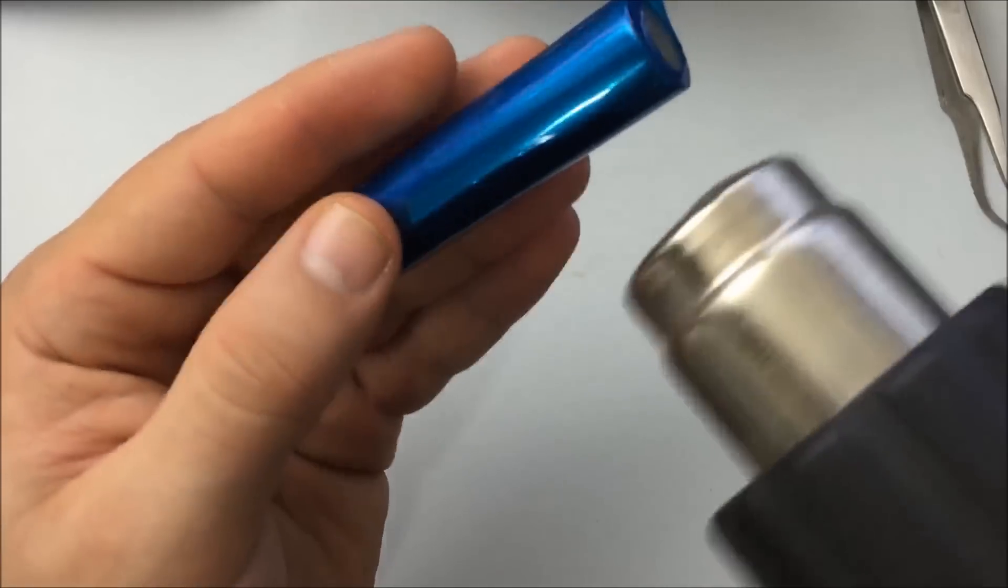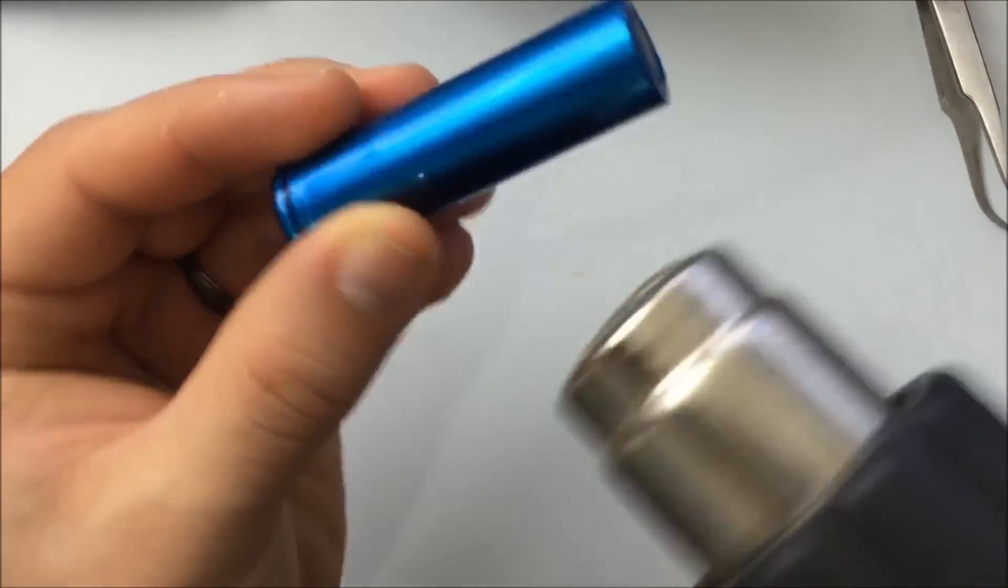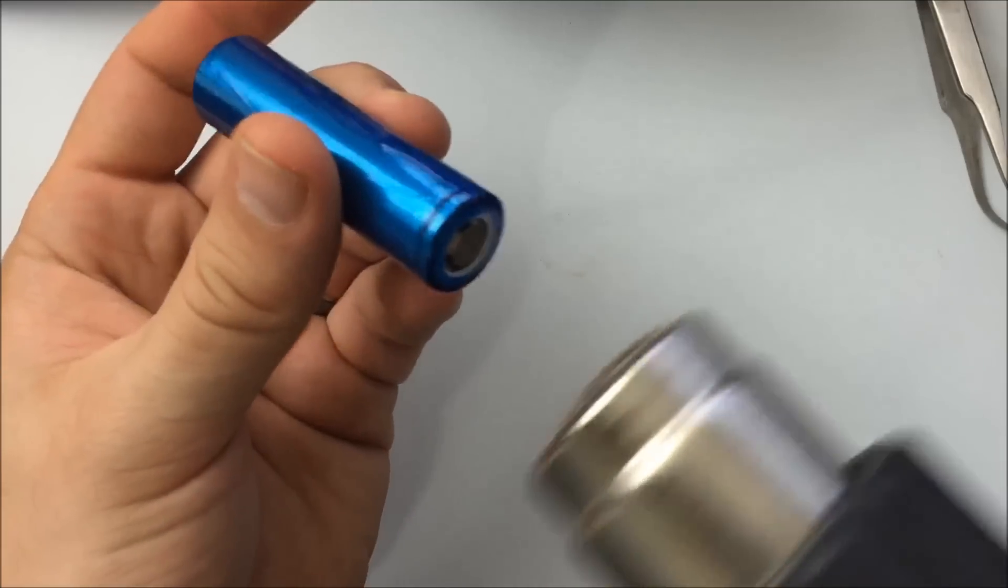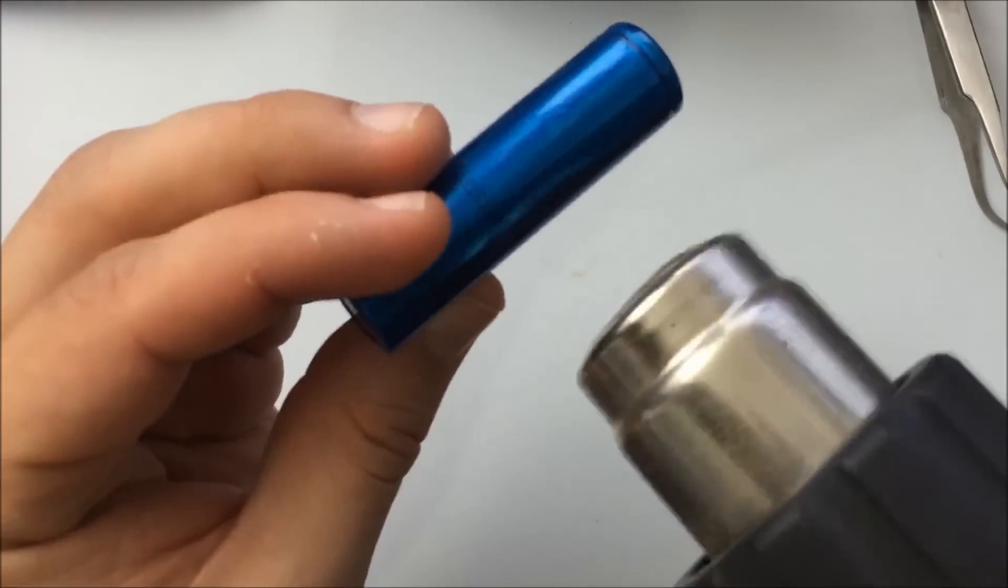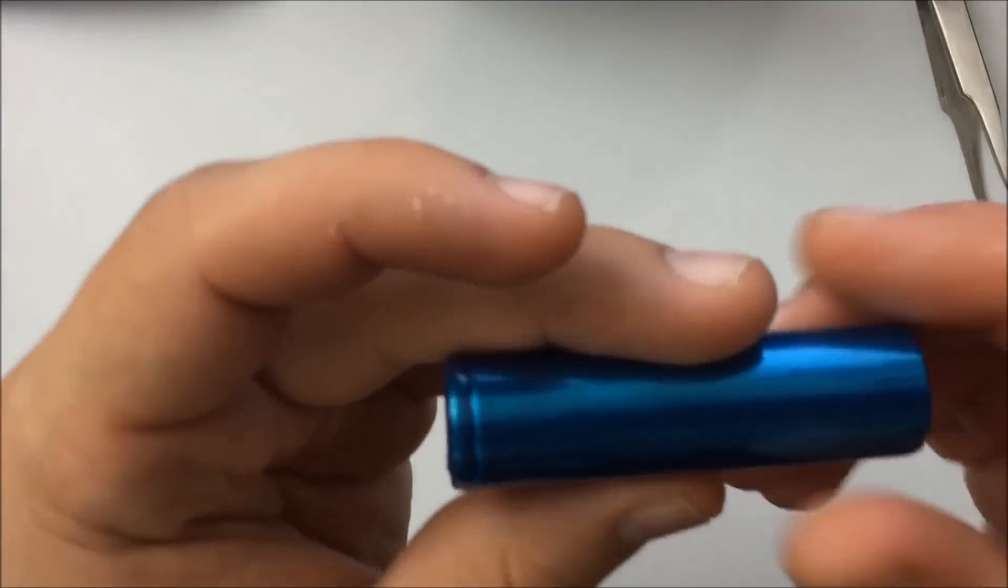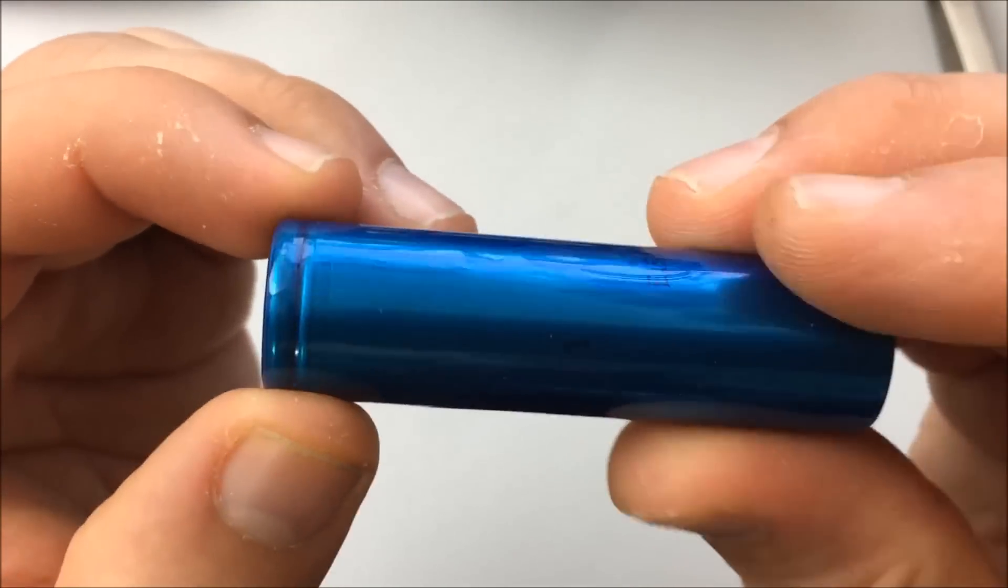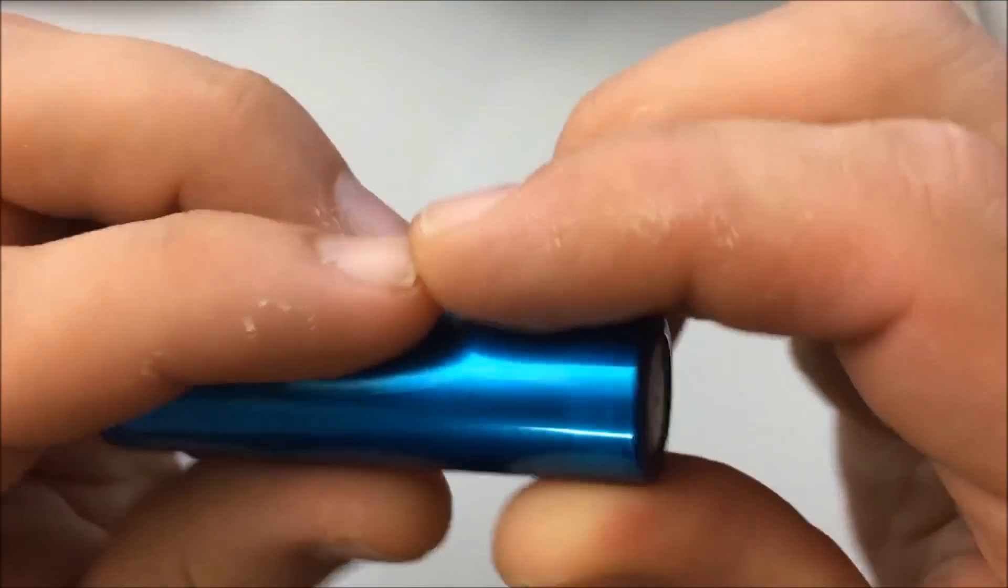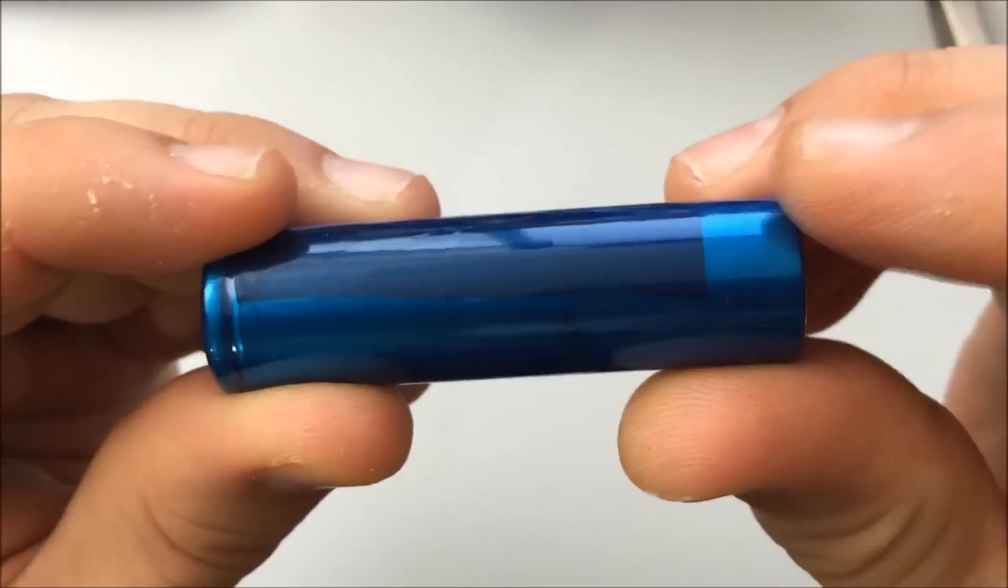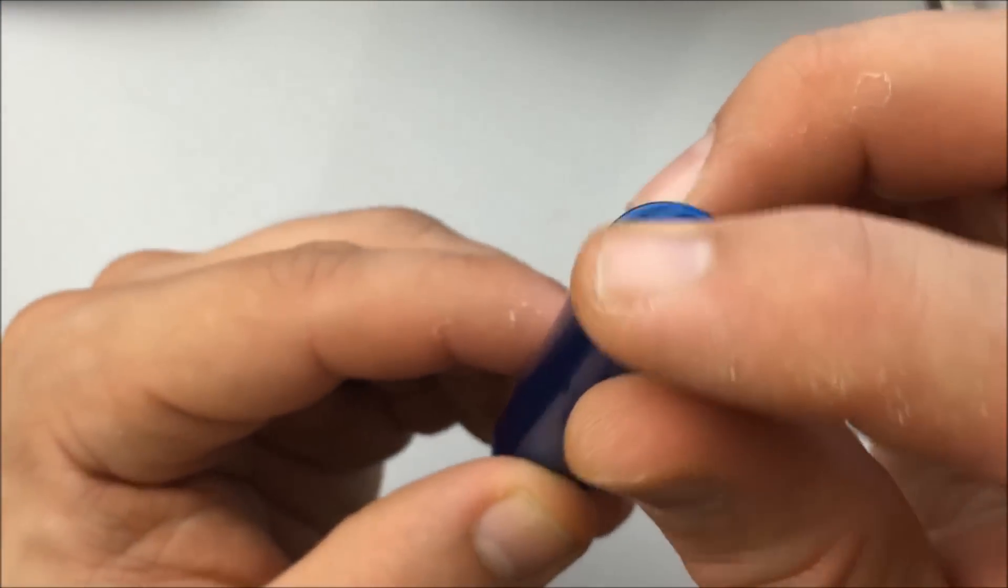You can also use protective gloves if it's too hot for you. You don't want to burn yourself. And that's it. Here's your freshly wrapped battery. Everything is sealed. Nice and smooth. And you can see the little marker that I put in there so I know it's a brown. And you can make that small. You can do anything you want really. It's up to you.